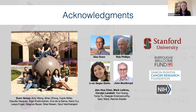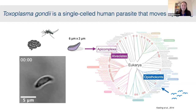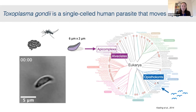One of my favorite things about this story is that we'll be using flocking theory, originally inspired by the collective motion of birds, to understand actin organization and actin flocking in Toxoplasma gondii — way over on the eukaryotic tree of life. This highlights how math can unify across scales and systems.